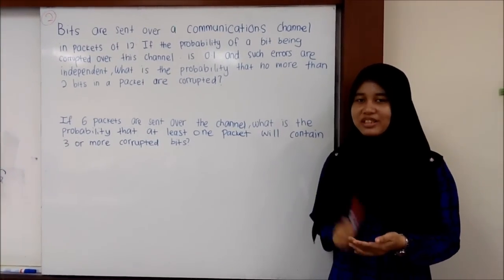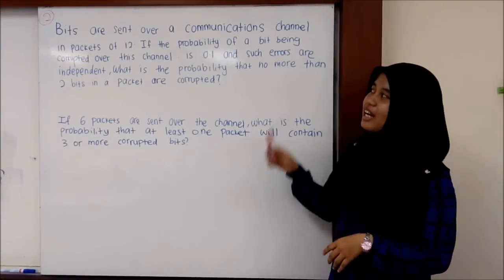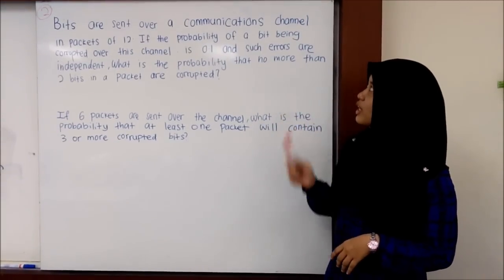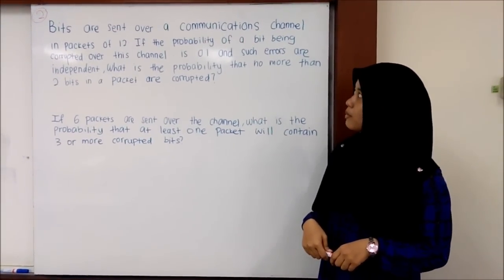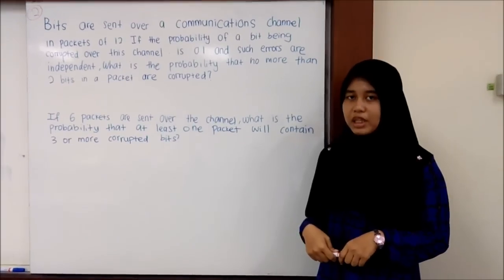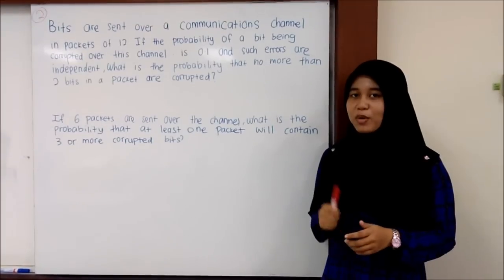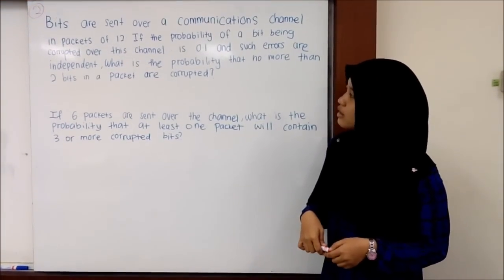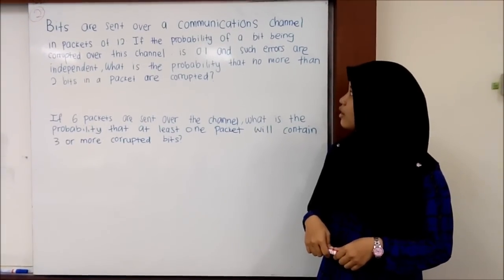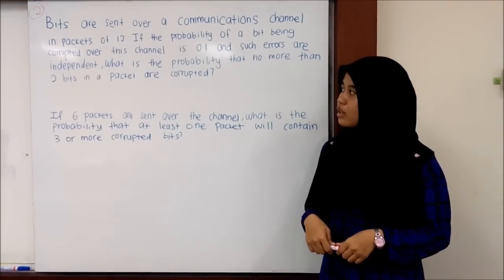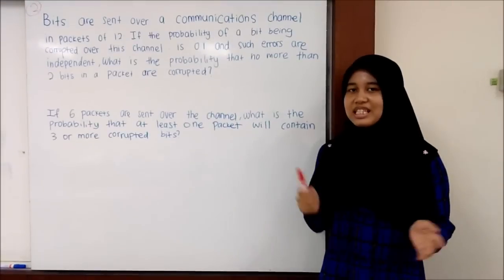The second question for binomial discrete distribution: bits are sent over a communication channel in packets of 12. If the probability of a bit being corrupted over this channel is 0.1, and such errors are independent, what is the probability that no more than 2 bits in a packet are corrupted?